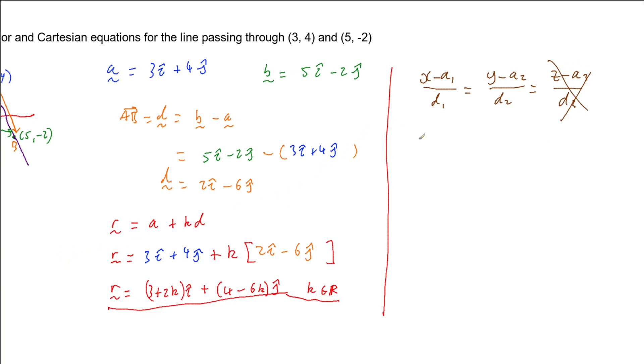So if we go and put our information in, we're going to have (x - 3)/2 equals (y - 4)/(-6). Now if we had three dimensions, we'd have three of these equal together. But considering we've only got two expressions separated by equals, we've got just a single equation.